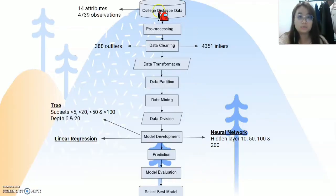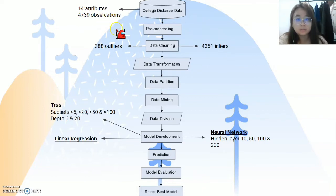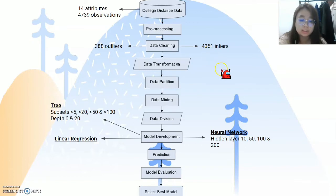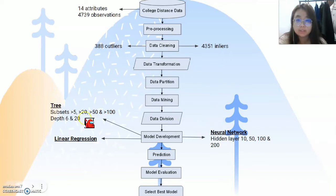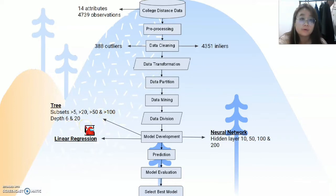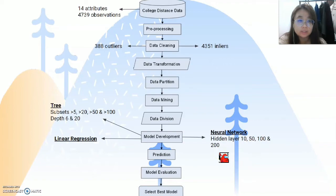The overall methodology flowchart shows that there are 14 attributes and 4,739 observations in the original dataset, but after preprocessing, only 4,351 observations will be used. For the decision tree model, various settings are applied: the minimum subset will be set to no more than 5, 20, 50, and 100, with maximum depths of 6 and 20 applied for each subset size. The neural network will be developed with 10, 50, 100, and 200 hidden layers.